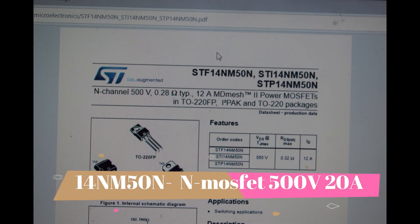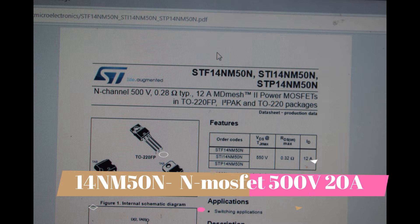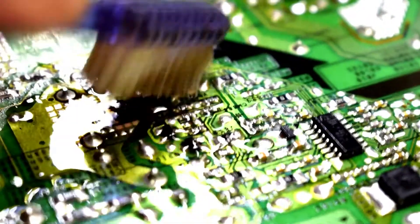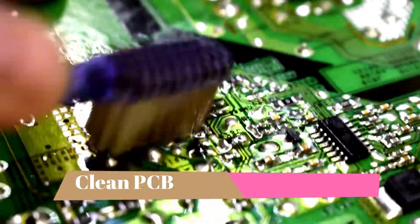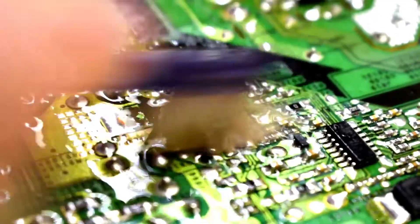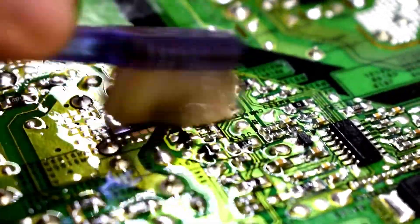This is a schematic for the chip that I'm replacing. It's a 14NM50N, or you can use an equivalent N channel MOSFET. Because I put a lot of flux when I was removing that chip, you have to remove all that to make it nice and clean.